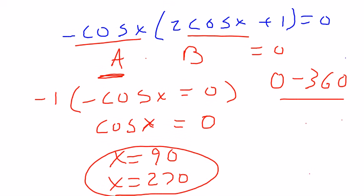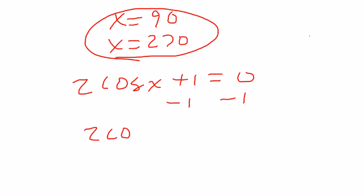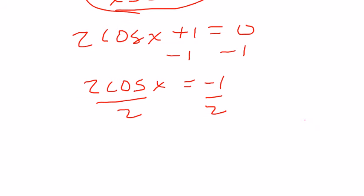Well, that means 2 cosine of x plus 1 equals 0. Subtract 1. 2 cosine of x equals negative 1. Divide by 2. Cosine of x equals negative 1 half. When is this true? This happens at 120, and it won't let me scroll down, so I'll just go up here to the side in a different color.